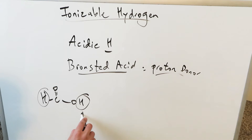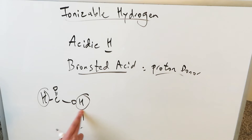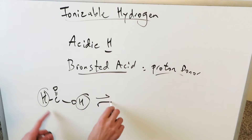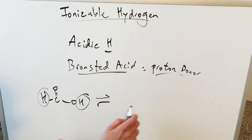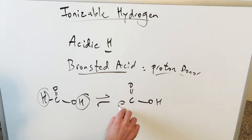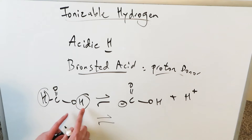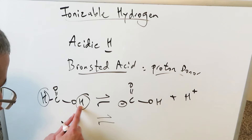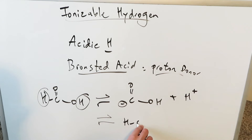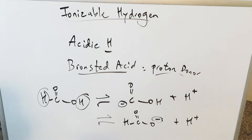If you're leaning towards the oxygen-attached hydrogen as your choice, you would be right. But hypothetically, if we thought the carbon-attached hydrogen to be our ionizable hydrogen, what would be the outcome? When that hydrogen attached to the carbon goes away, you'd have a conjugate base plus a proton generated. However, if you look at the other hydrogen being ionized, your end result is quite different — you have a different conjugate base and H+ over here.